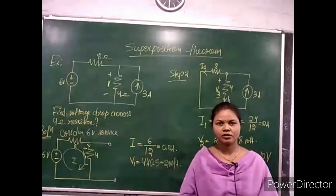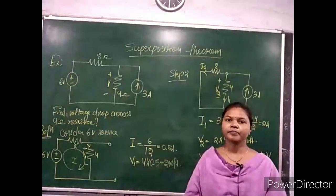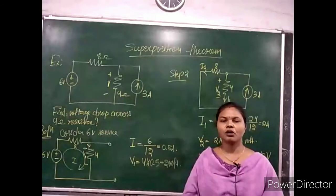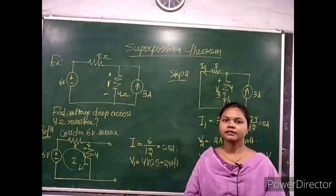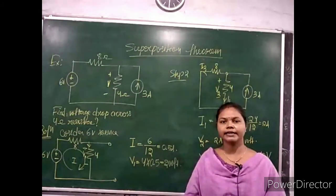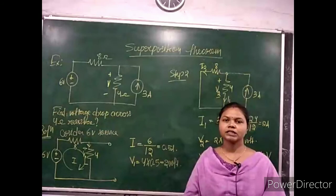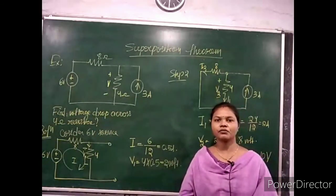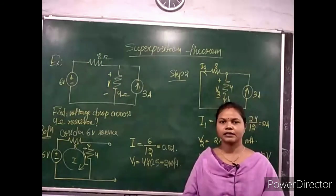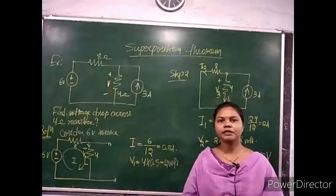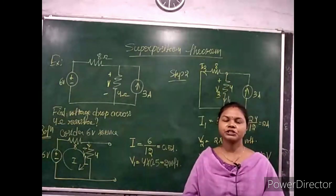In conclusion, the superposition theorem is applicable for finding current through or voltage across an element in a circuit that has more than one independent source. This principle applies only to linear bilateral networks. It is not applicable for circuits consisting of only dependent sources. After completing this topic, you will be able to solve any electrical network using the superposition principle.